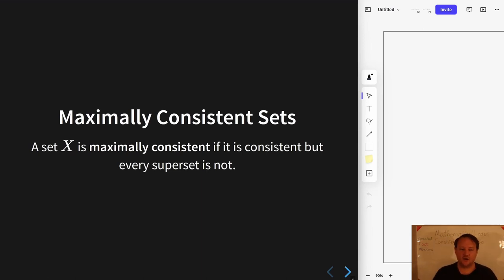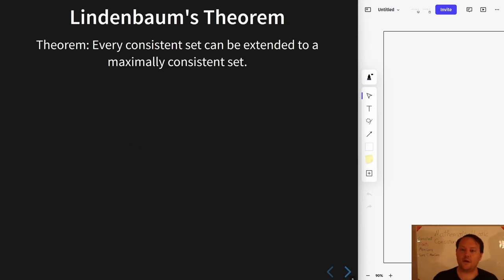Equivalently we define it in the way that I have written on the slide that the set X is maximally consistent if it is consistent, but any superset of it is not. That's only slightly different from what I said before because rather than just entering in one extra formula, we're entering any superset anyway.